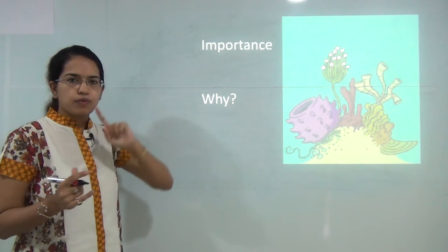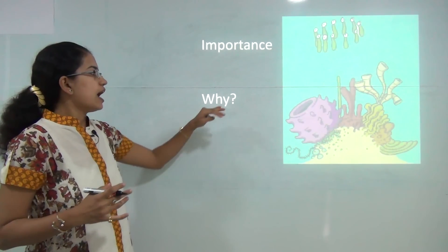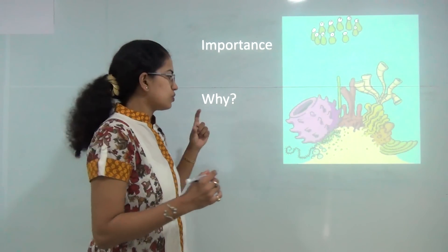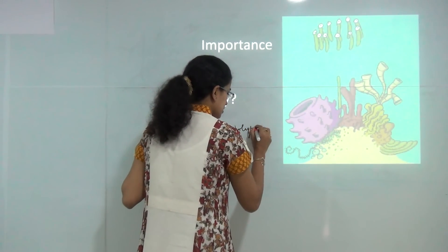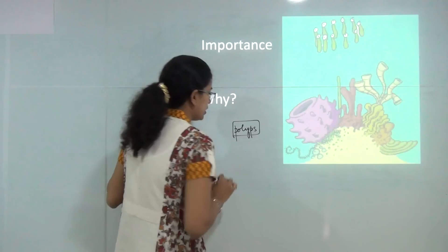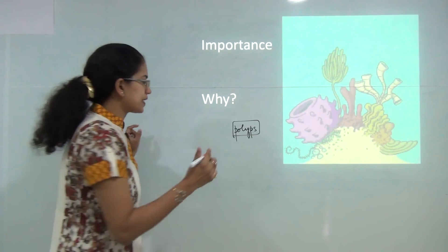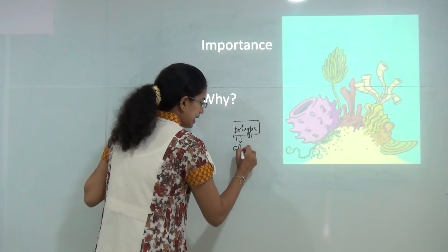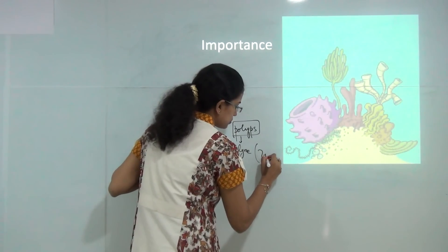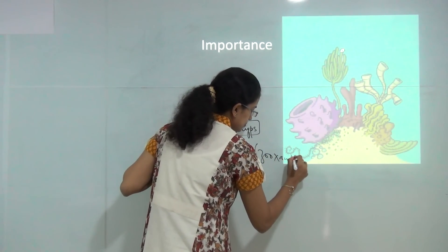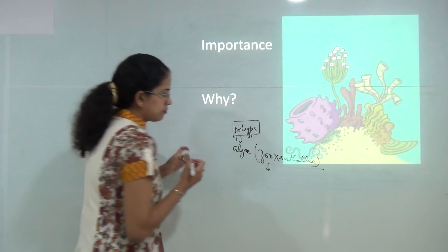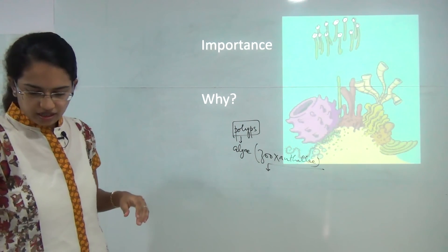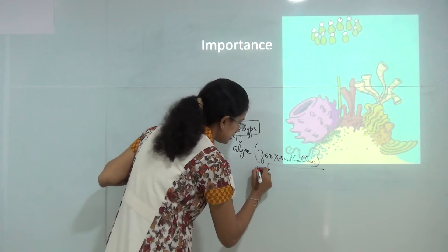Now to start with we would be talking about two main things. First is the importance of the coral reefs and why coral bleaching occurs. Now corals are tiny animals which are known as polyps and these polyps live in a symbiotic relationship with an algae known as zooxanthellae.